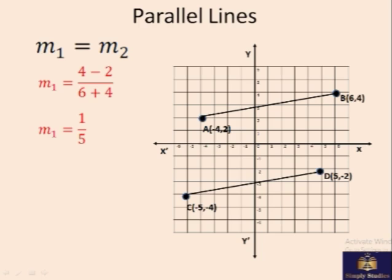Similarly, if you calculate the slope of the second line, so it will be -2 minus -4, that is -2 plus 4, divided by 5 minus -5, that is 5 plus 5, which gives you 1 over 5. We can see that the slopes of these two lines are equal, both are 1 by 5.